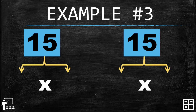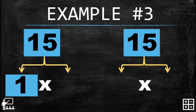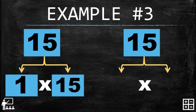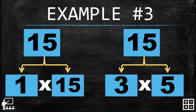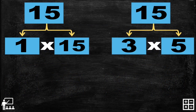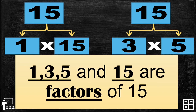Example number three — I'll give you the number fifteen. Can you guess what number we're going to multiply by one to get fifteen? Correct, that's fifteen. How about this one — can you guess the number we will multiply by three to get a product of fifteen? That's right, five. To summarize, one, three, five, and fifteen are factors of fifteen.